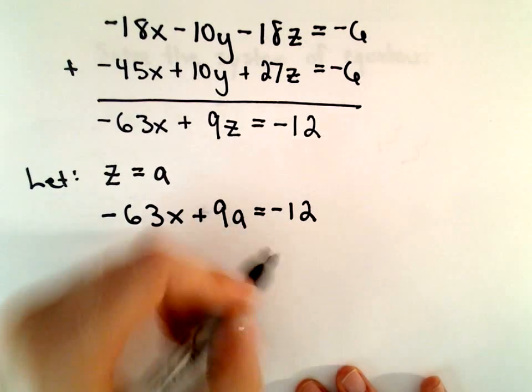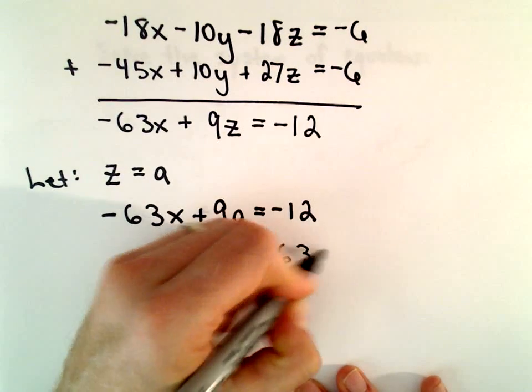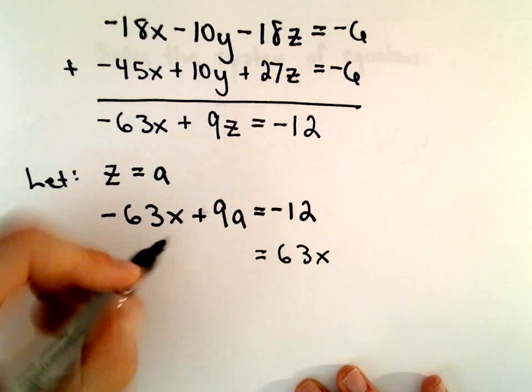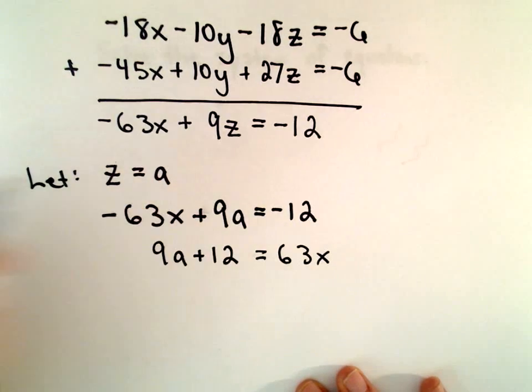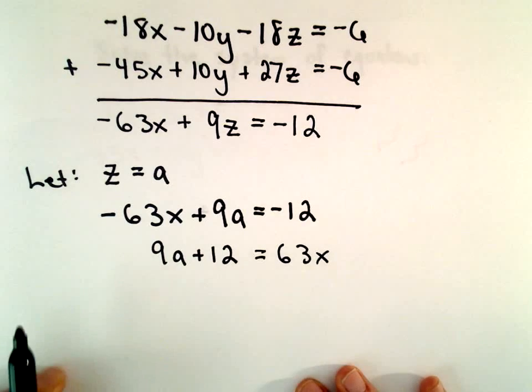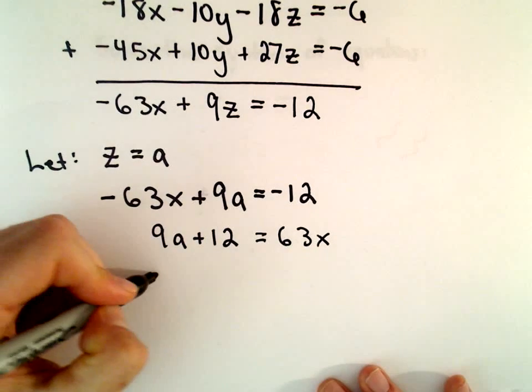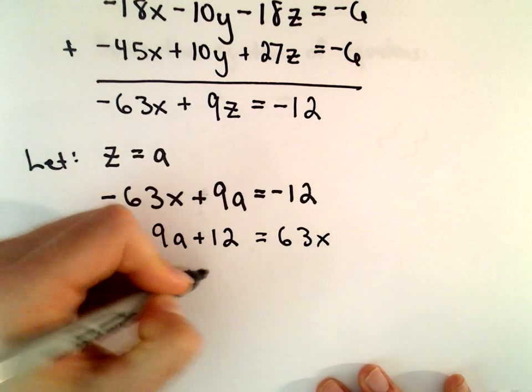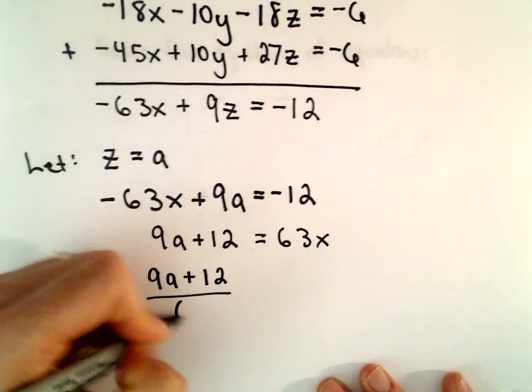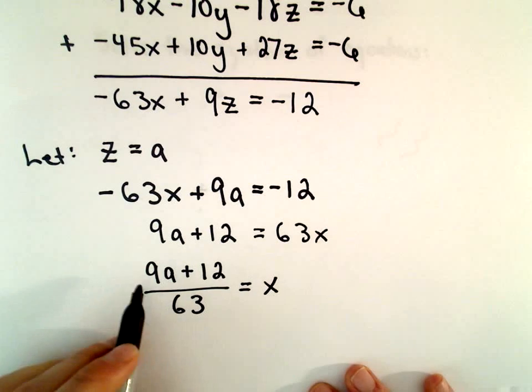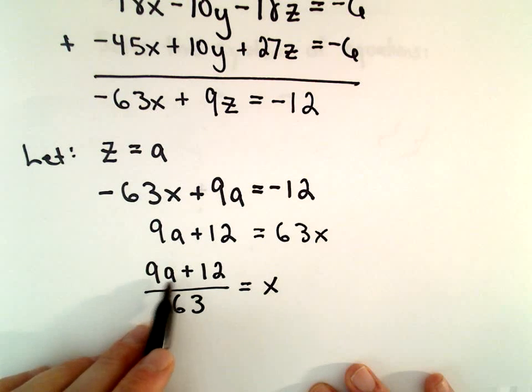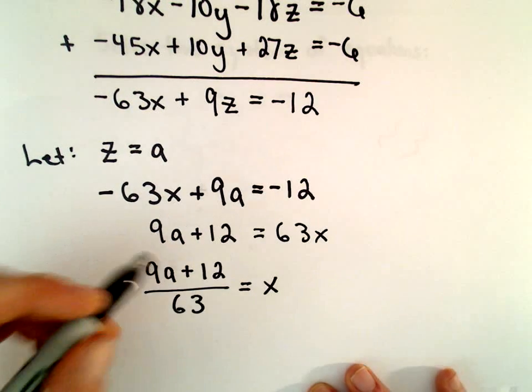I'm going to add 63x to both sides and add 12 to both sides. So we'll have 9a plus 12 equals 63x. Now I'm just going to divide both sides by 63. And now we've got our value for x. It says x will be 9a plus 12 over 63.